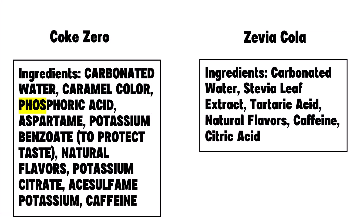Let's compare two different colas. On the left we have Coke Zero and on the right Zevia Cola. I've highlighted in the Coke Zero where the phosphorus additive is — phosphorus is added to colas to preserve the caramel brown color and keep it from turning black. Zevia Cola doesn't have caramel color added, so there was no need to add phosphorus. In my experience, foods labeled as organic or natural tend to be less likely to contain phosphorus additives.